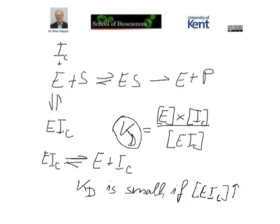It means that in this case, we form lots and lots of enzyme-inhibitor complex, and we don't have a lot of free enzyme and inhibitor. So if Kd is actually small, then we have very tight binding of the inhibitor.